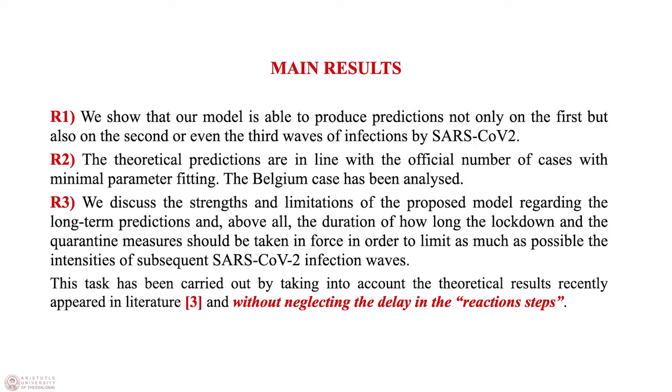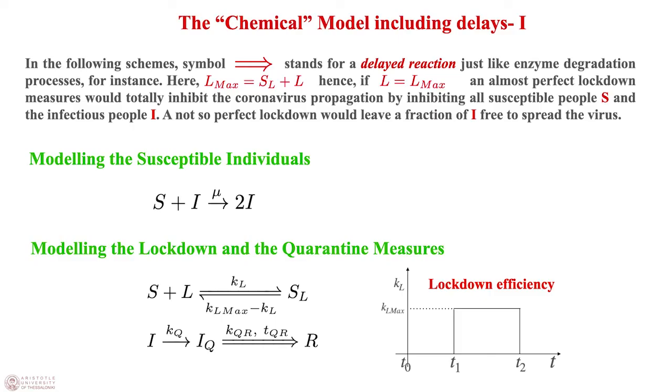To get the evolution equation we take inspiration from the Michaelis-Menten enzyme substrate reaction model, the so-called MM reaction model, where the enzyme is associated to the available hospital beds, the substrate to the infectious people, and the products of their reactions to the recovered people respectively. The main results achieved in our work are the following: we show that our model is able to produce predictions not only on the first but also on the second or even the third waves of infection by SARS-CoV-2.